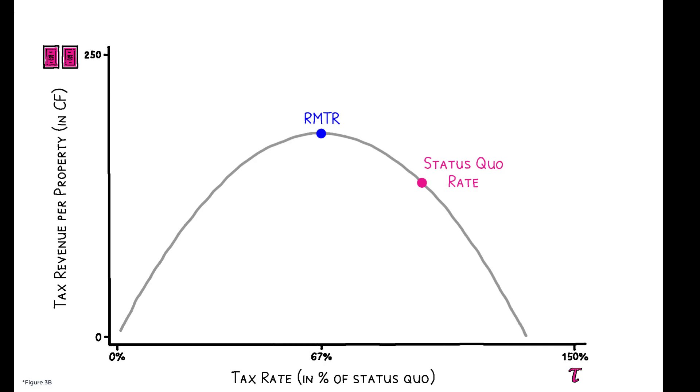As seen before, if the government were to cut the status quo rate to reach the RMTR, revenue would increase by 32%. Suppose, however, that after implementing the RMTR, the government also decides to increase enforcement by replacing low-capacity tax collectors with average collectors.